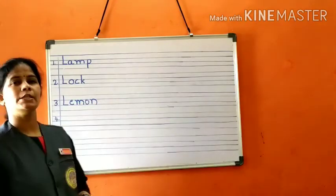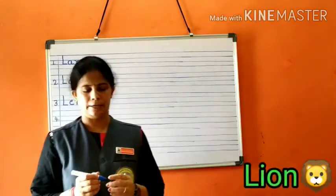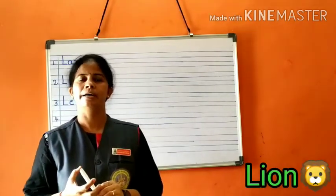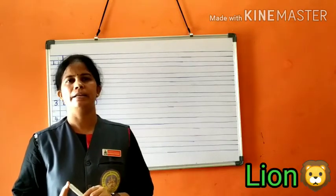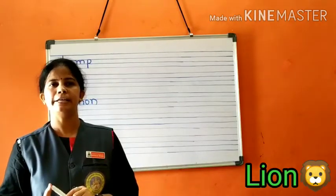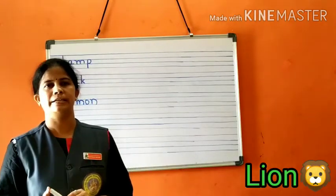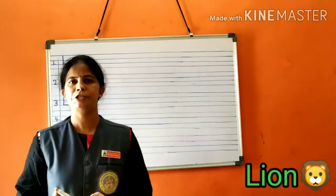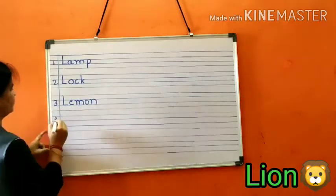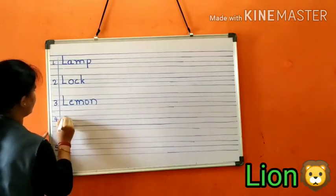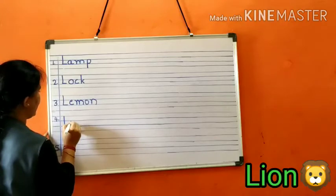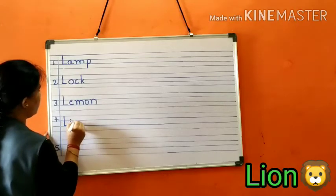Next word is lion. Lion means simha. It is a wild animal. It is the king of jungle. Shall we write the spelling of lion children? L-I-O-N, lion.